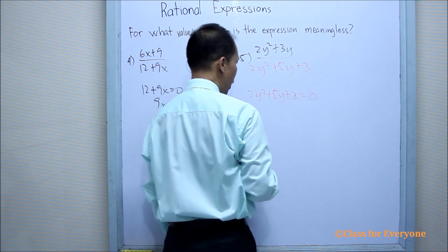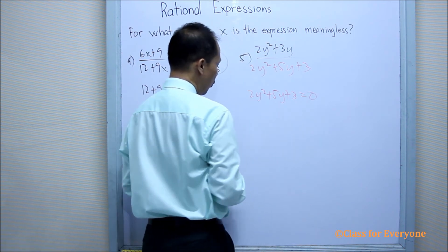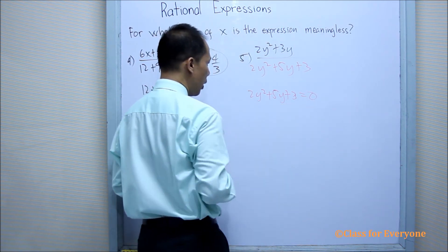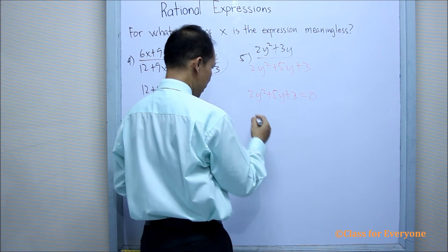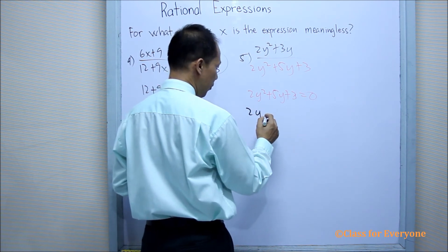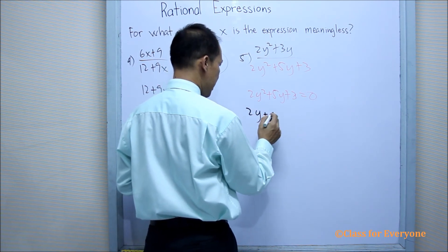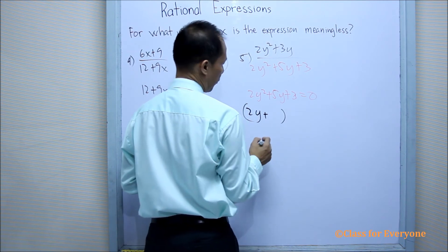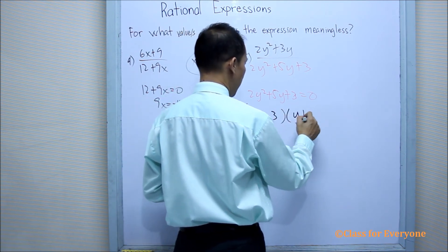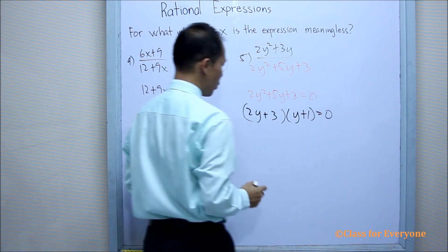Therefore, we have to factor the polynomial as 2y plus 3 times y plus 1 equals 0.